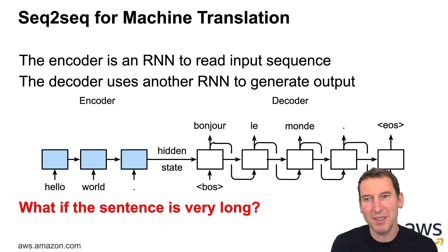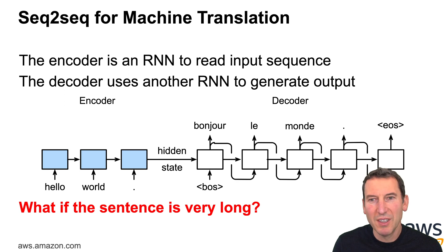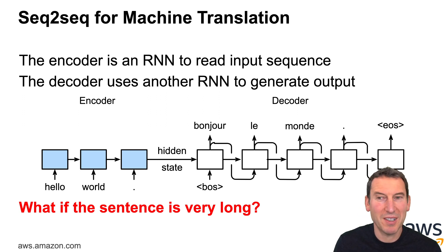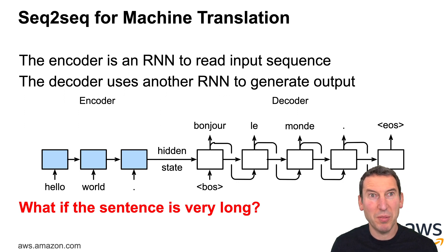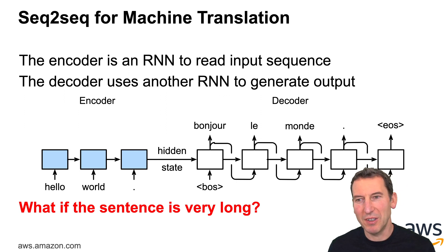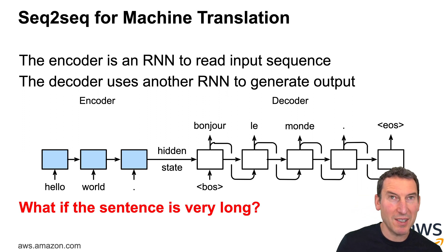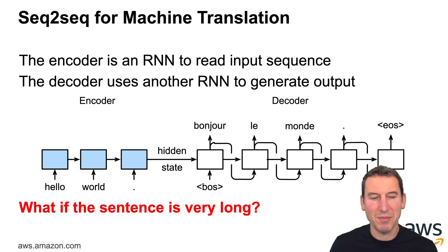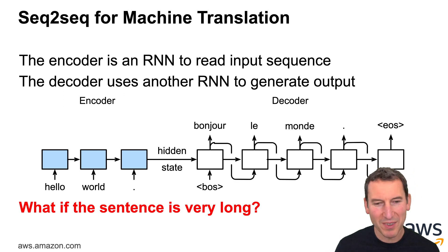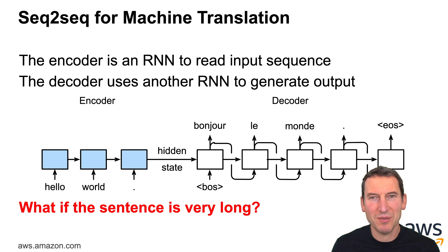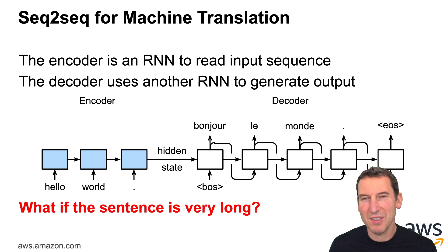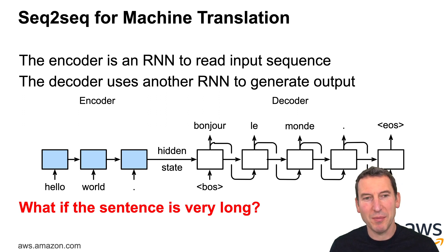You encode the original sequence into some hidden LSTM state and then you start generating the translated version — say, French: 'bonjour le monde.' This is great for short sequences where a hidden state of a hundred or a thousand dimensions is an accurate representation of all possible short sentences. But what if the sentence is very long, has a lot of side clauses, mistakes, non-sequiturs, and keeps rambling on? It is highly unlikely that there is a nice finite-dimensional representation that could also handle short, concise, meaningful sentences.